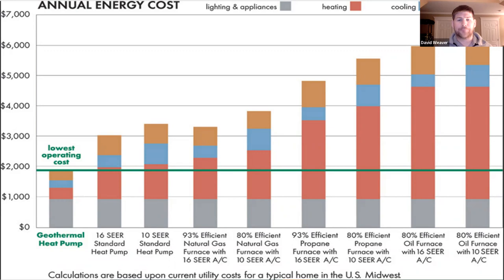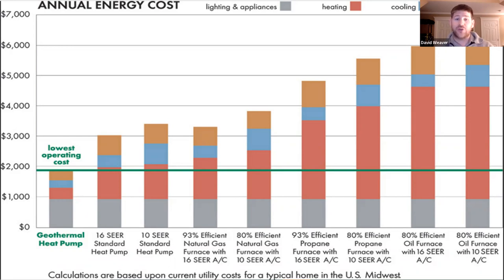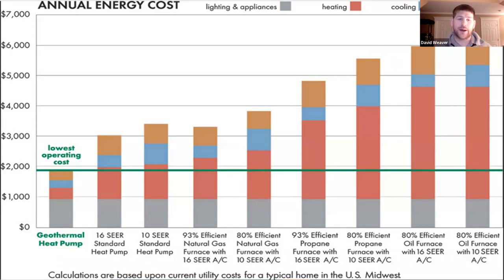Looking at a comparison chart: most Northern Illinois residents currently have an 80% efficient natural gas furnace and a 10 SEER air conditioning unit. Comparing that to an efficient 16 SEER standard heat pump, you can see savings in both cooling and heating expenses. And if you go all the way to geothermal, you have the most savings across all categories. Of course, this fluctuates based on the cost of gas — which changes every month — and the cost of electricity, but this calculation shows what you can expect for a typical Midwest home.